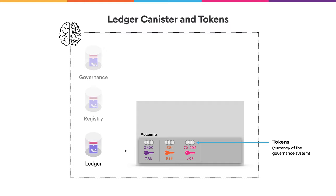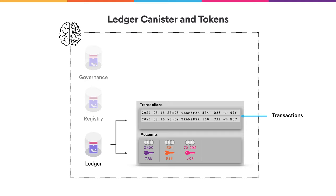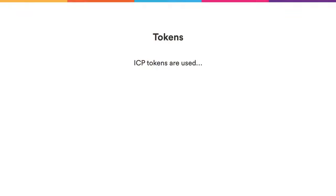By principal in this context I just mean an identity by which a user is authenticated on the internet computer. Tokens can then be sent from one account to another, and this is recorded in the transactions of the ledger canister, as can be seen here on top. The tokens are the currency of the governance system and in particular they can be used for three different things.